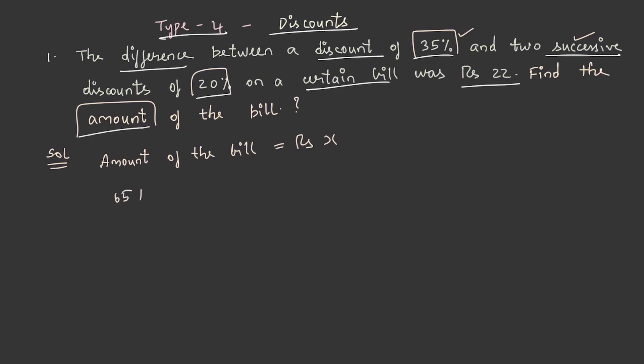So 65% of X minus 80% of 80% of X. I have taken 65 here because there has been a discount of 35%. Taking 35 out of 100 we get 65. And the minus here is because we need to find out the difference between the discounts.